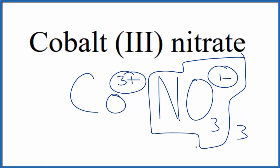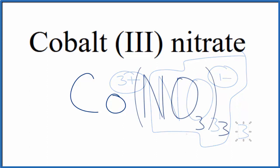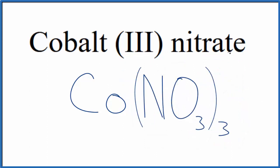We would need to replace this here with parentheses though, since we have 3 of these nitrates. And this is the formula for cobalt 3 nitrate, Co(NO3)3. We have 3 nitrate ions here.